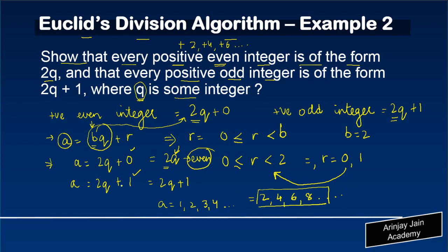As against this, if a is equal to 2q plus 1, because 2q is even, whenever we add 1 to it, we are always going to get an odd integer. And because q is positive, therefore, this has to be always a positive odd integer.